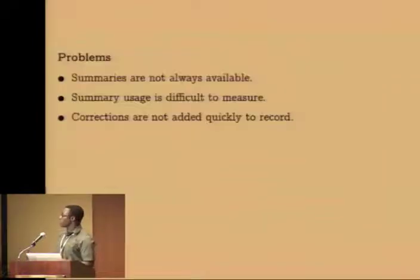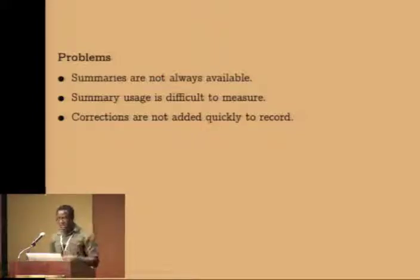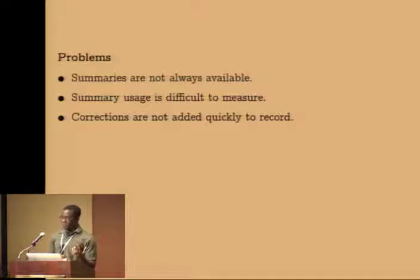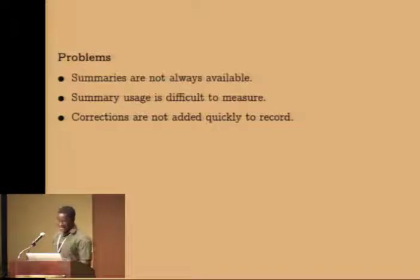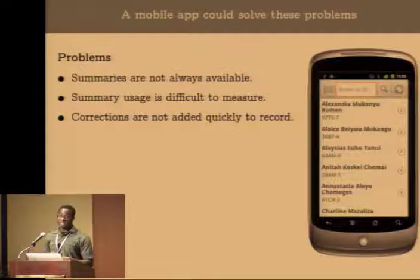To summarize the problems to solve: summaries are not always available, usage is difficult to measure, and corrections take time before being added to the record. These are fundamentally limitations of running a large-scale paper-based system. AMPATH has progressively improved the system over the years, but as part of that work, they wanted to see if an electronic system would work better. I believed that building a mobile application would be a good first step toward addressing some of these challenges.